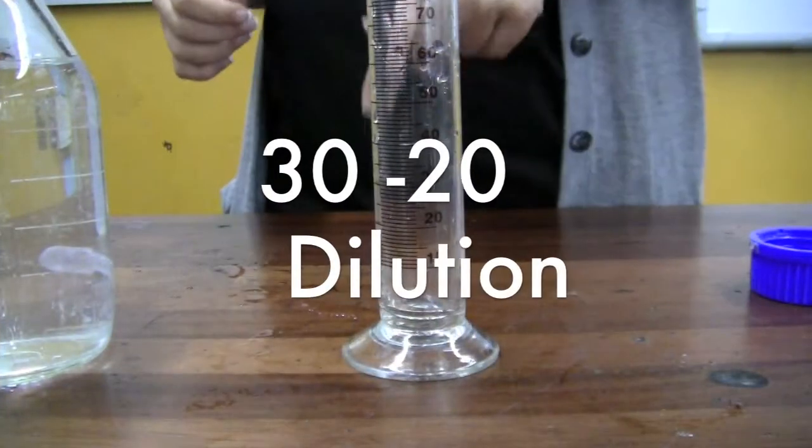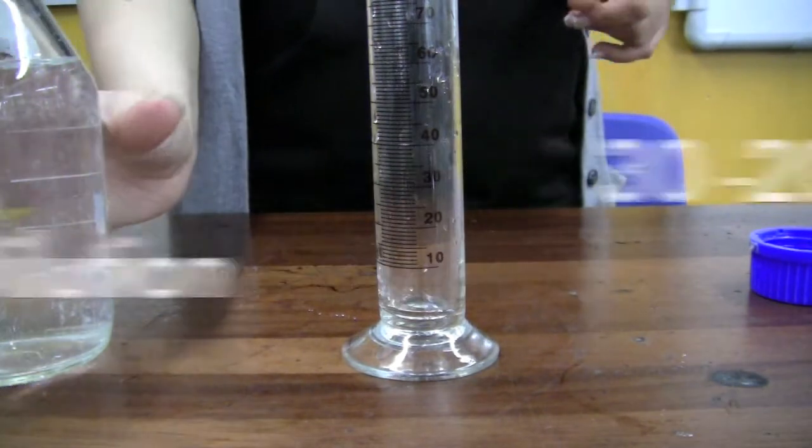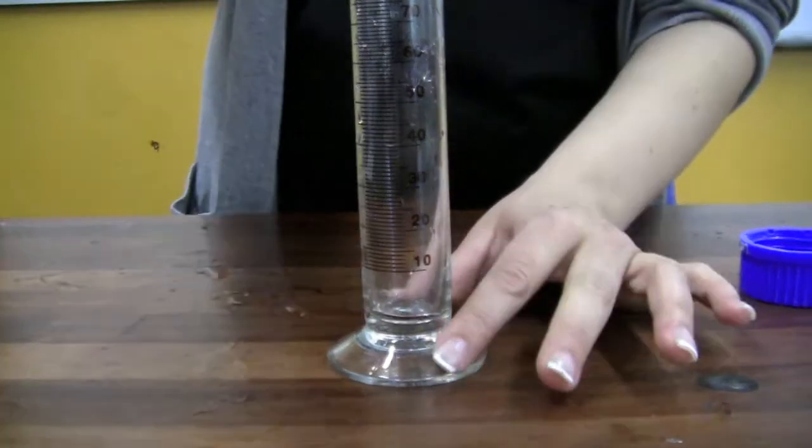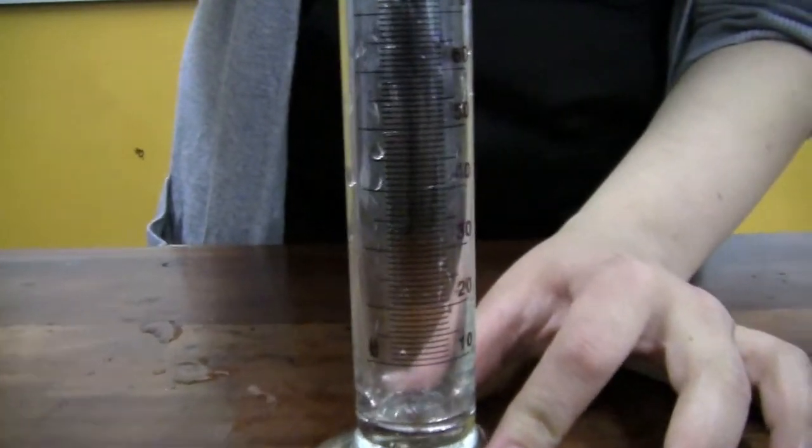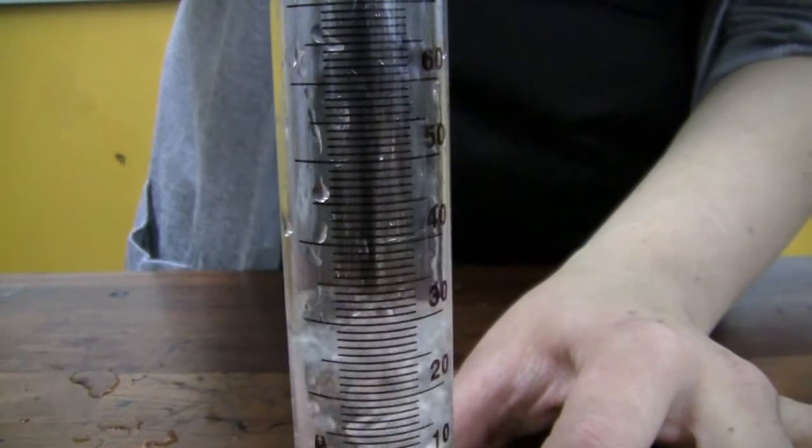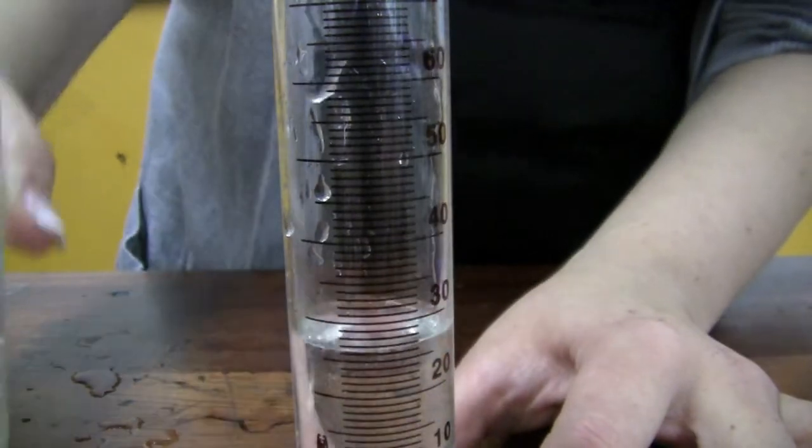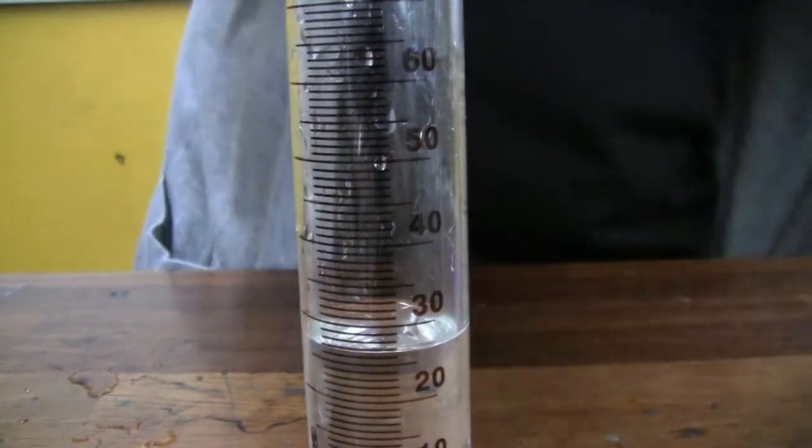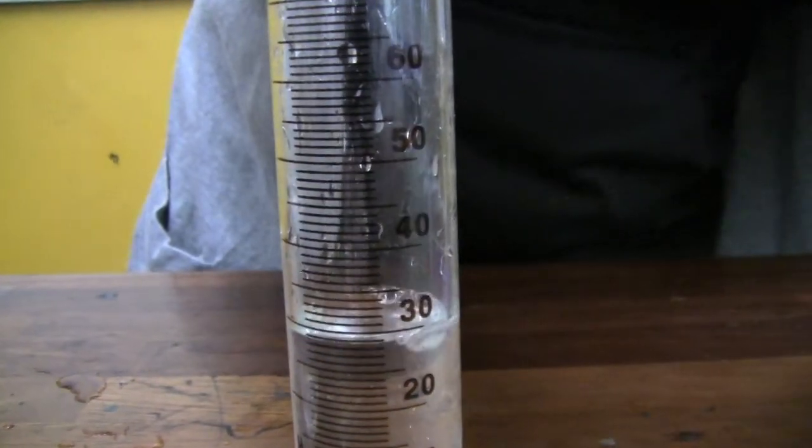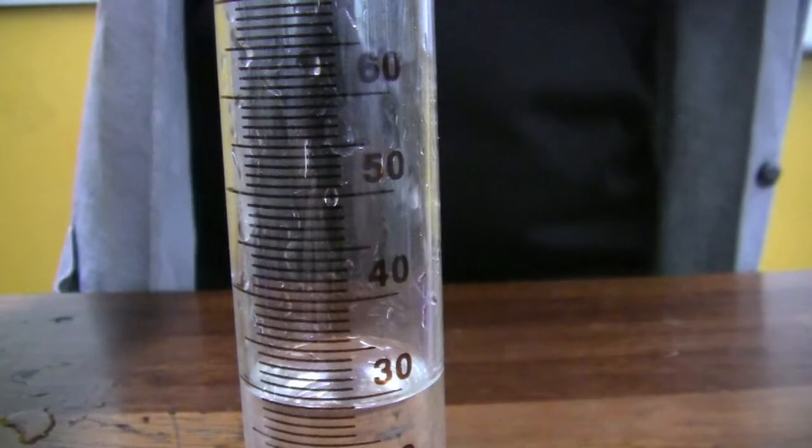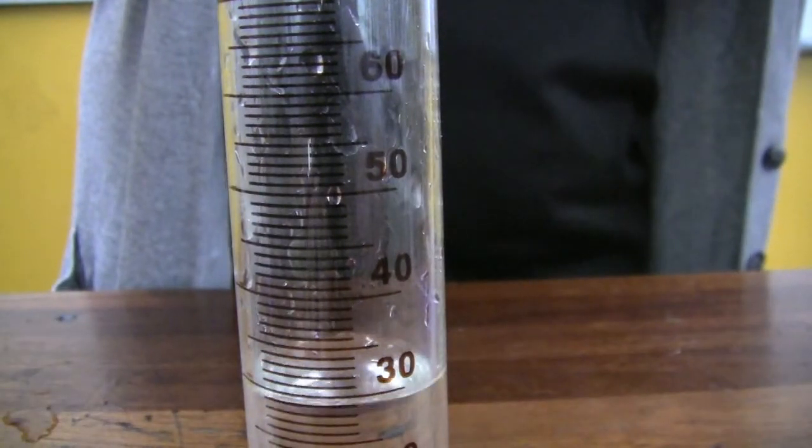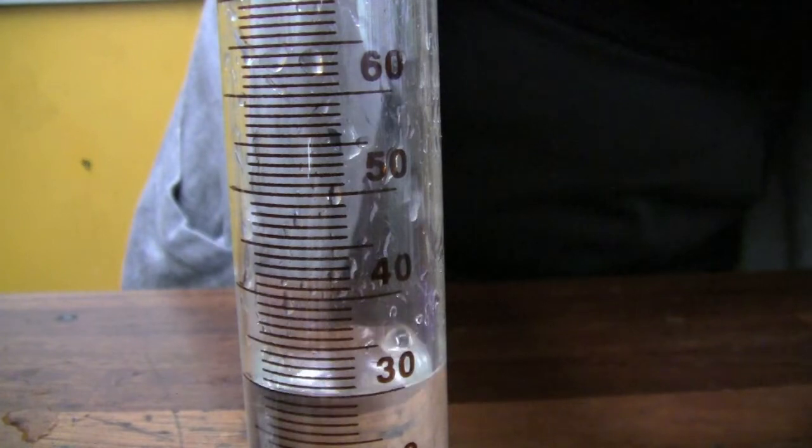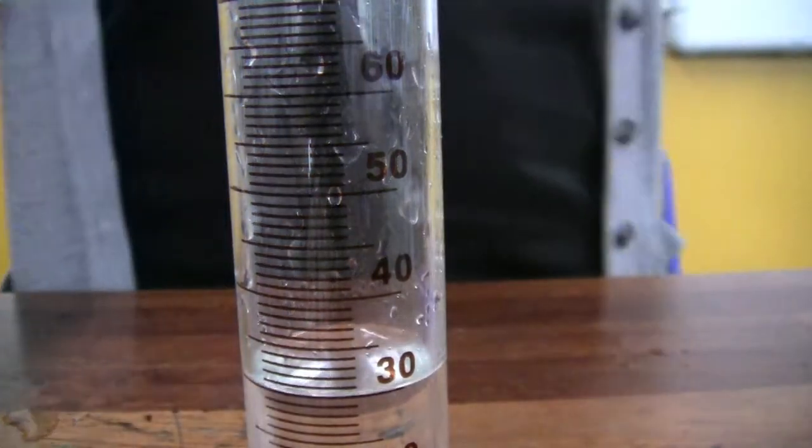For the third concentration, we need 30 ml of sodium thiosulfate. So we can pour in again up until about 25. And we're going to stop, finish off with the pipette, up to 30. Making sure that the meniscus is in line with the 30 line.